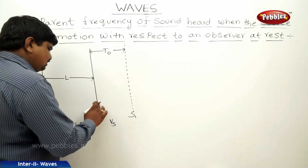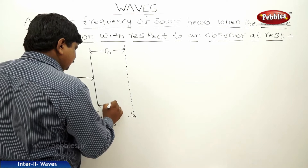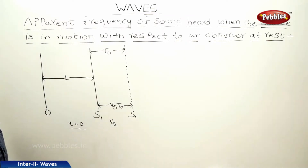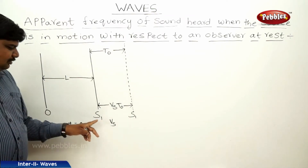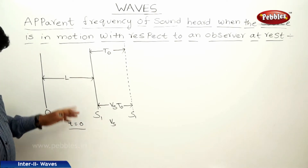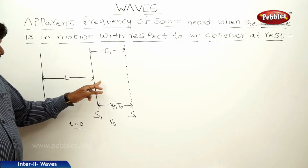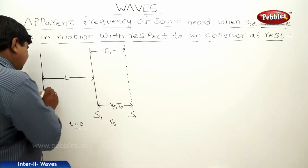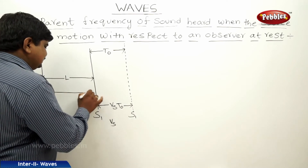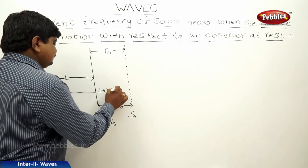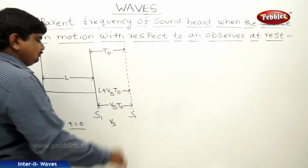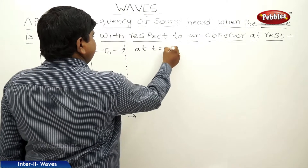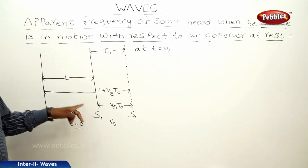At t = 0, the source is at distance L from the observer. At t = T0, the source has moved an additional distance of Vs × T0, so the total distance from the observer becomes L + Vs × T0. At t = 0, this source has emitted a crest.